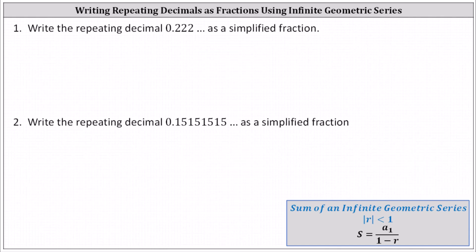Write the repeating decimals as simplified fractions. To do this, we'll write the repeating decimals as infinite geometric series and then determine the sum of the infinite geometric series. Recall the sum of an infinite geometric series is equal to S equals A sub one divided by the difference of one and R, the common ratio, as long as the absolute value of R is less than one.